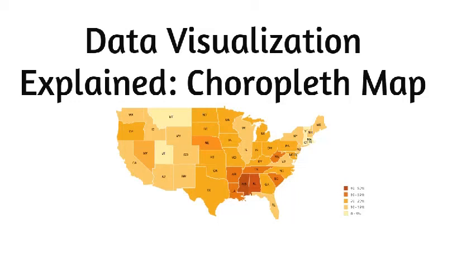A common error when producing choropleth maps is to encode raw data values such as population, rather than using normalized values — calculating population per square kilometer, for example — to produce a density map.